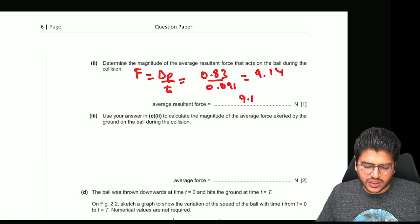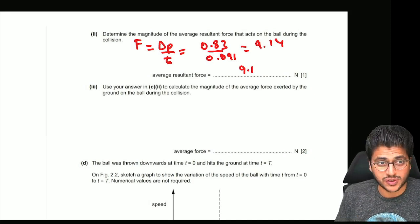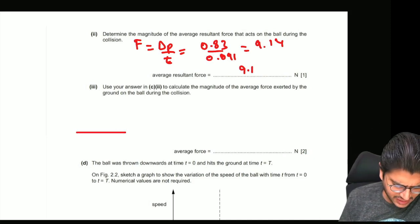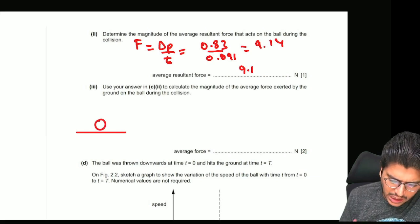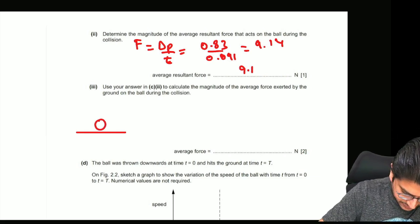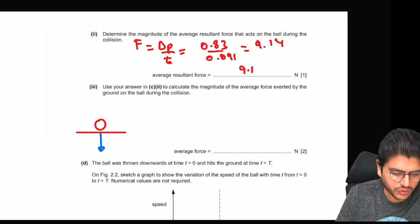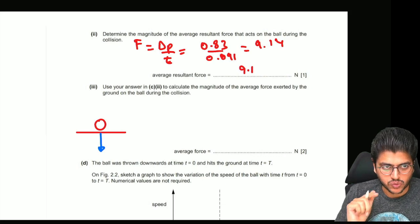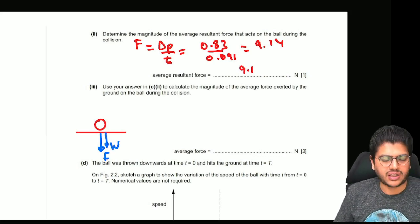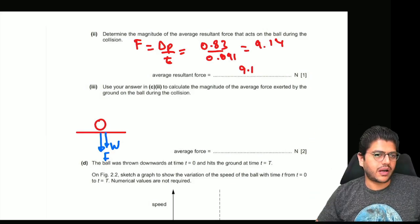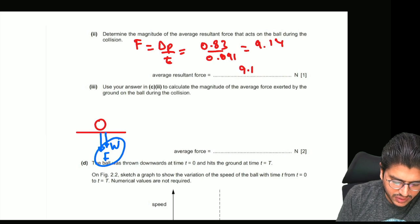Use your answer to calculate the magnitude of the average force exerted by the ground on the ball. You know forces are equal and opposite. When your ball strikes the ground, how much force did it exert on the ground? Two forces, not one: one was the force due to the collision due to the speed, and the other one was the weight of the ball. So the total force acting on the ground is the combination of these.